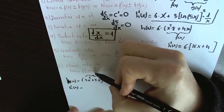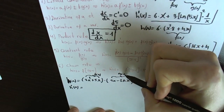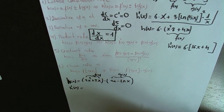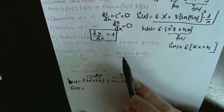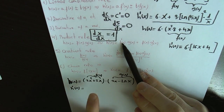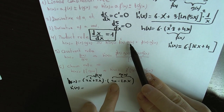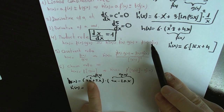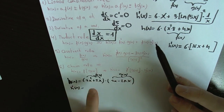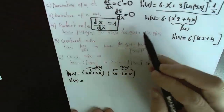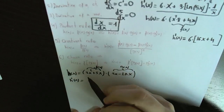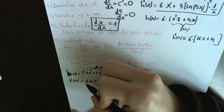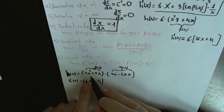If we have two functions depending on x, both multiplied by each other, the derivative is: the derivative of the first function f prime, multiplied by the second function g as it was before, plus the first function f as it was before, multiplied by the derivative of the second function g prime. We derivate the first function: the derivative of 3x squared is 6x, plus 5.